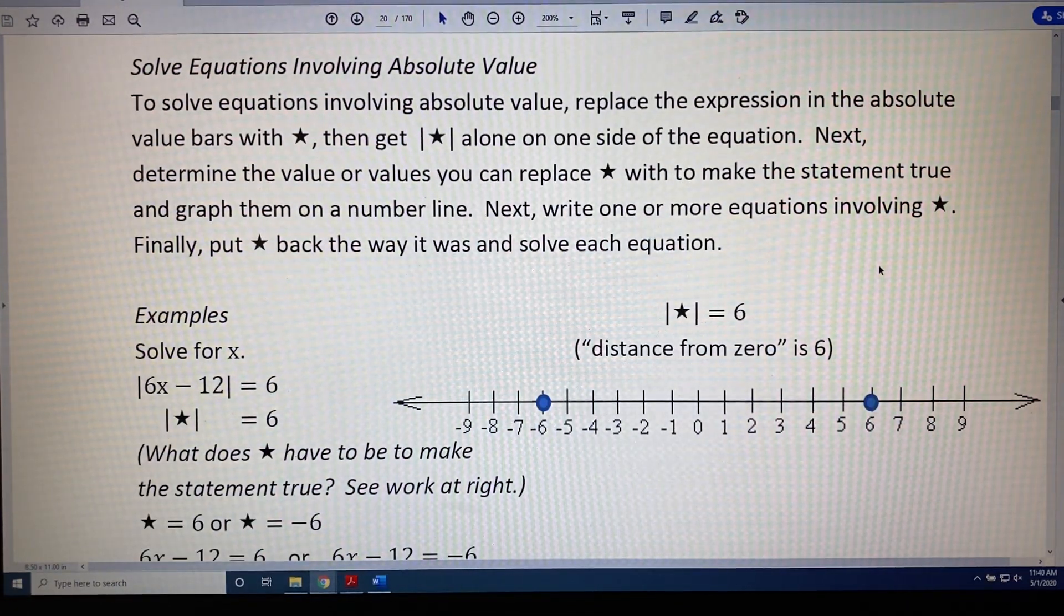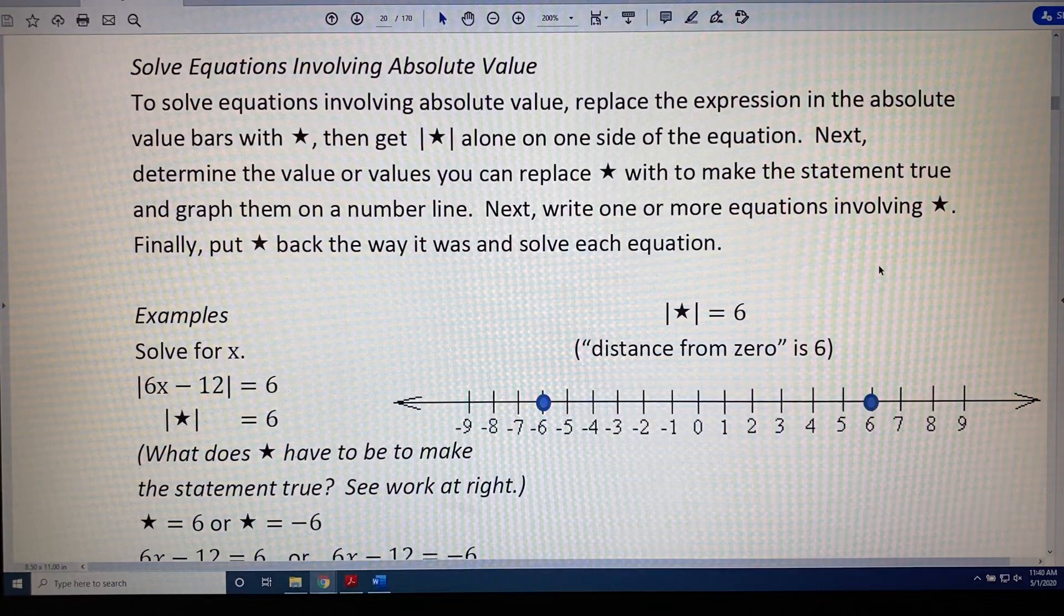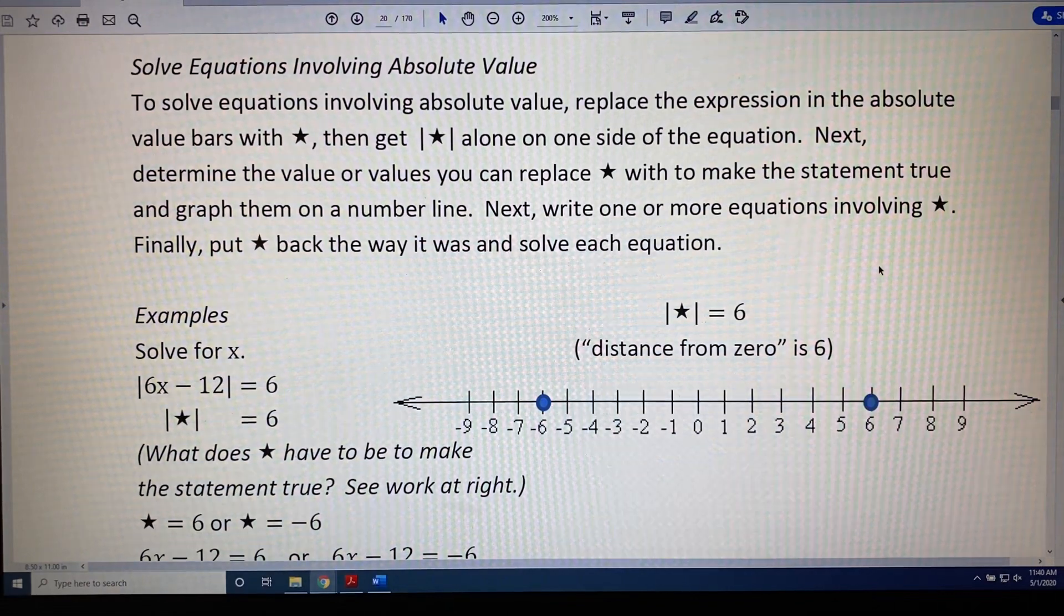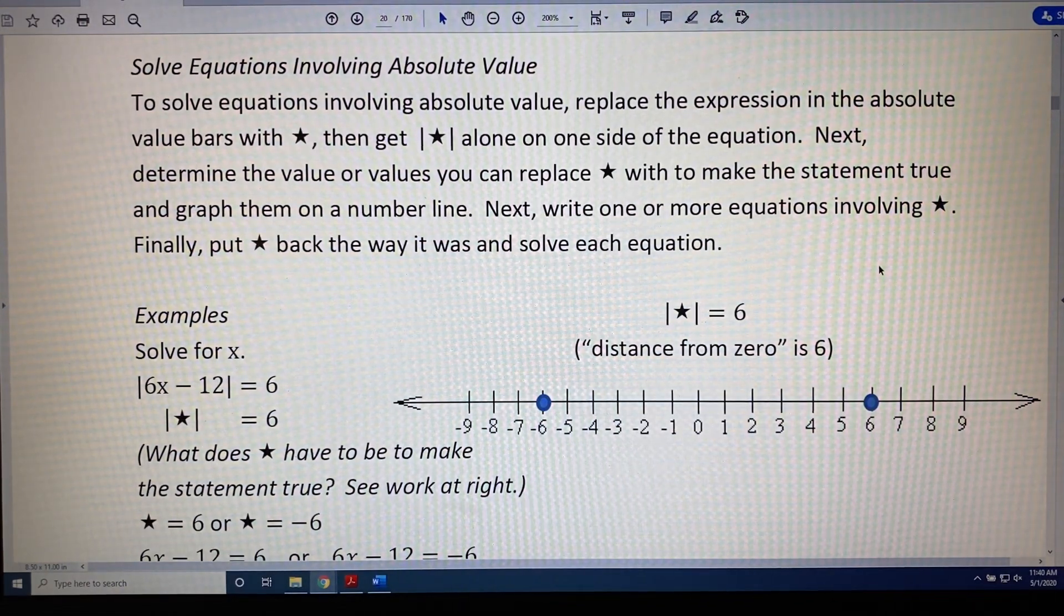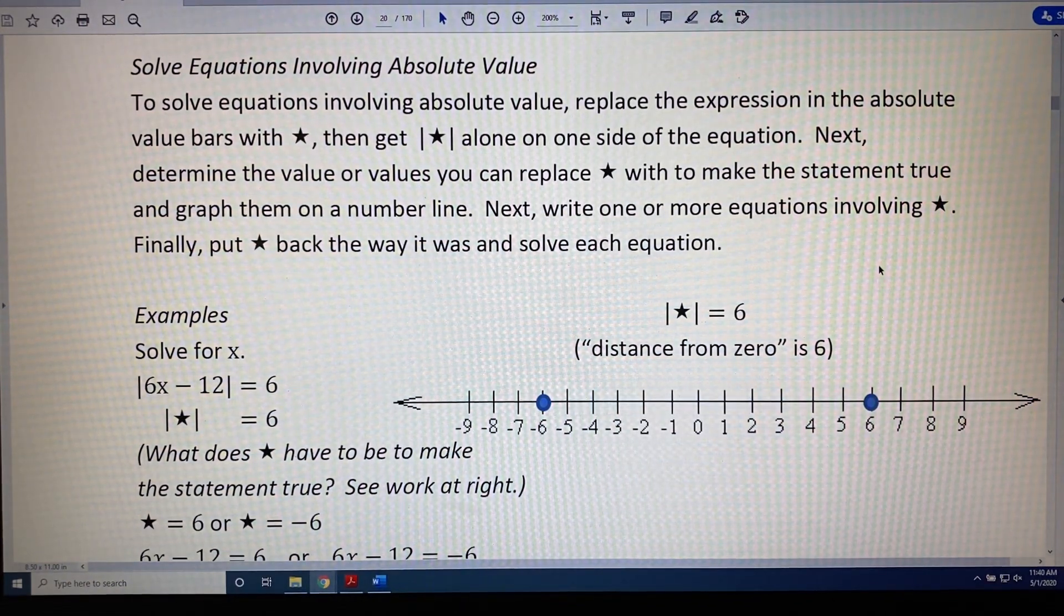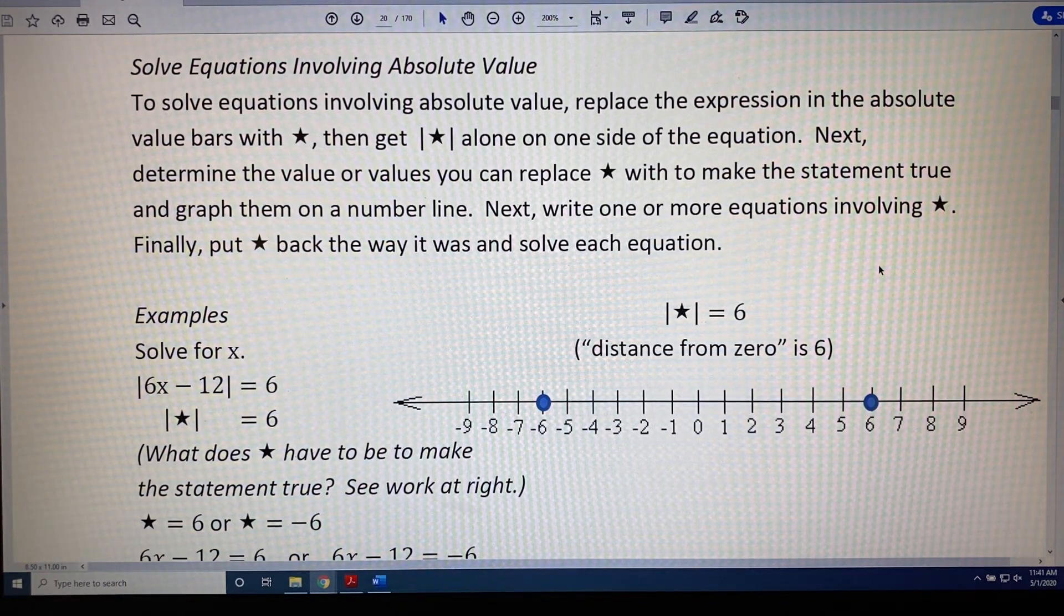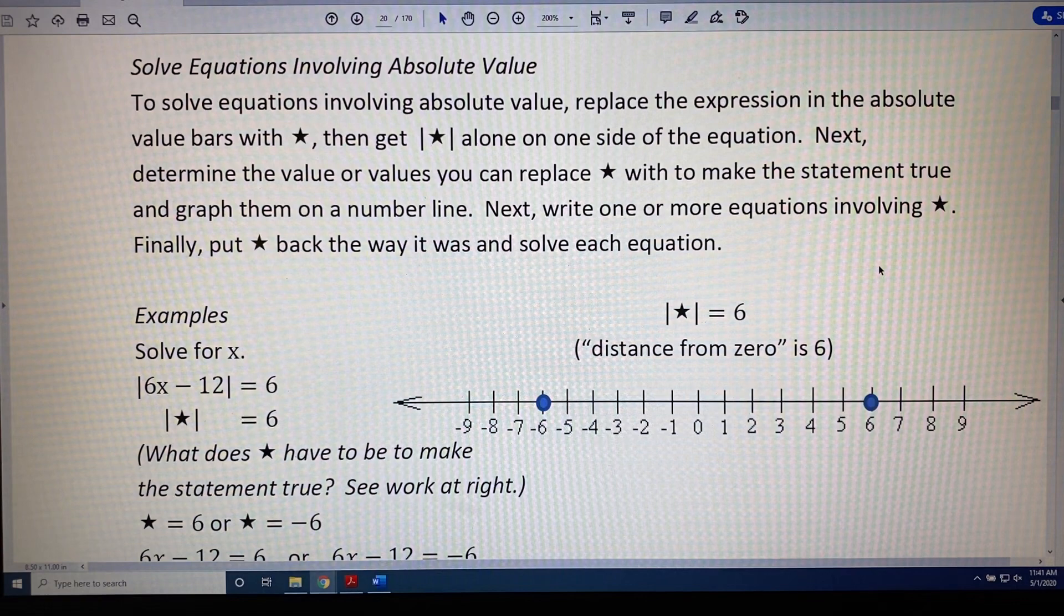To solve equations involving absolute value, replace the expression in the absolute value bars with star. Then, get the absolute value of star alone on one side of the equation. Next, determine the value or values you can replace star with to make the statement true and graph them on a number line.